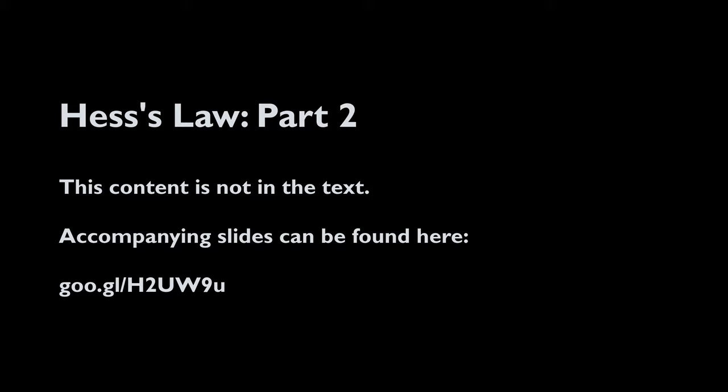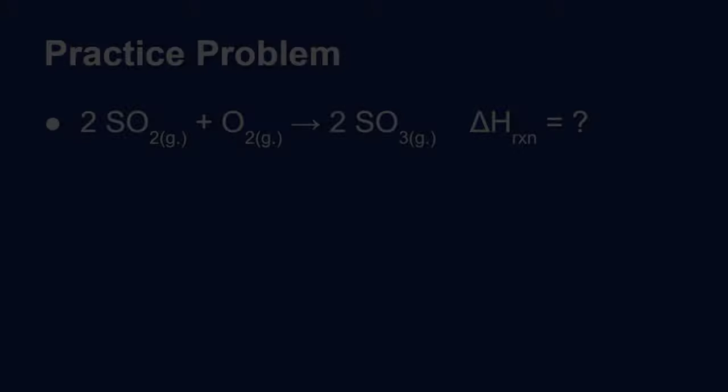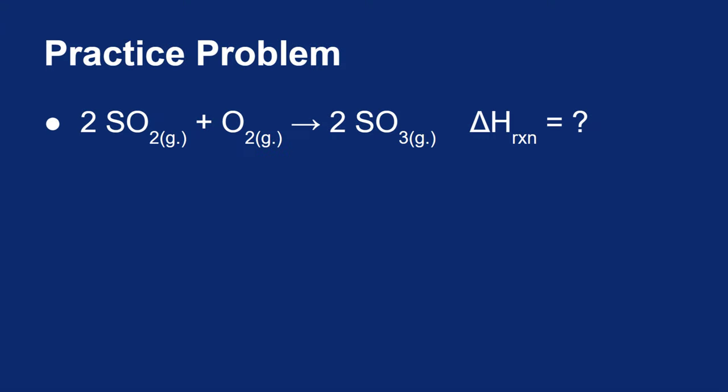Let's look at an example problem using Hess's law. If I take two moles of sulfur dioxide gas and combine it with oxygen gas, I'll make two moles of sulfur trioxide gas. What I would like to know is the heat of reaction — or what is the change in enthalpy — for this reaction.